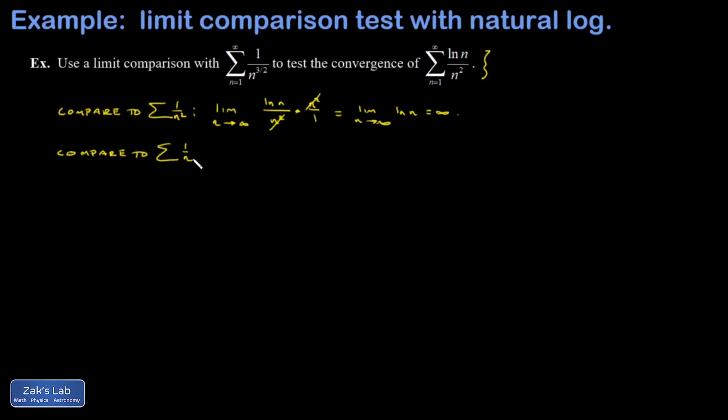And then we think, well, maybe we'll compare to the terms of the divergent harmonic series 1 over n, but something else goes wrong. When I divided by 1 over n, I just went ahead and wrote it as multiplying by the reciprocal. And now I have the limit as n goes to infinity, natural log n over n. That's an infinity over infinity indeterminate form.